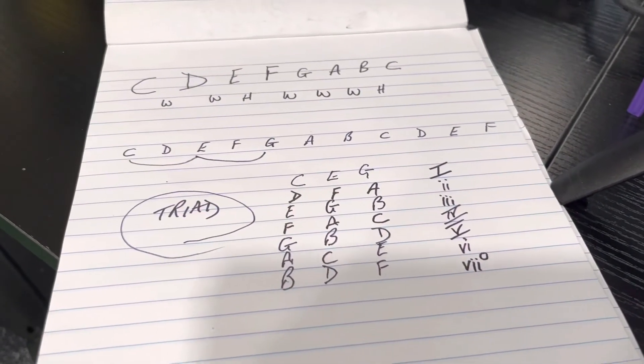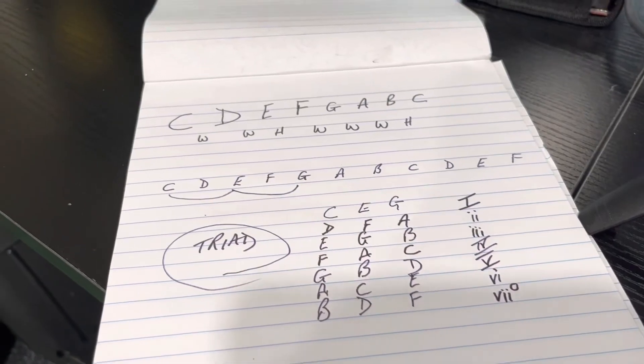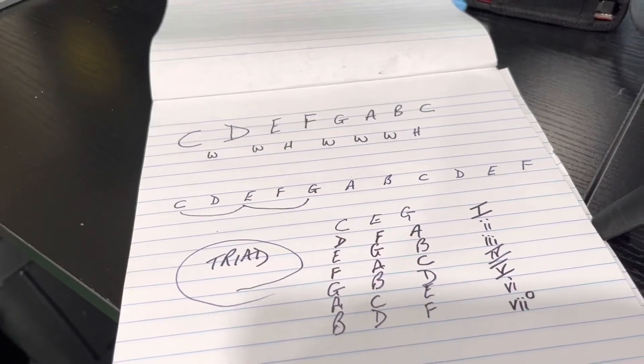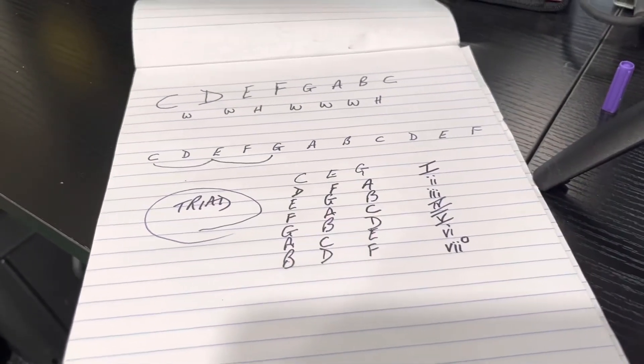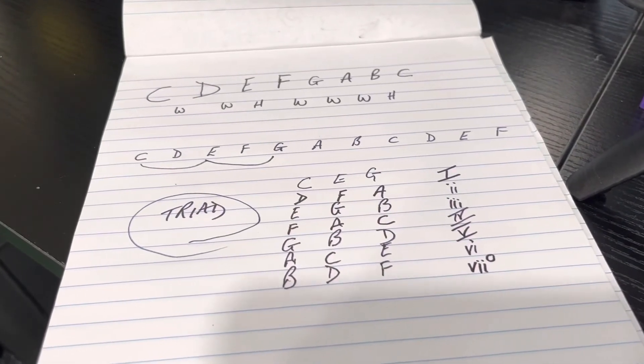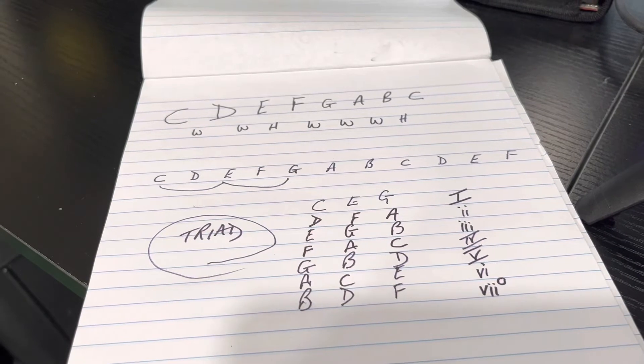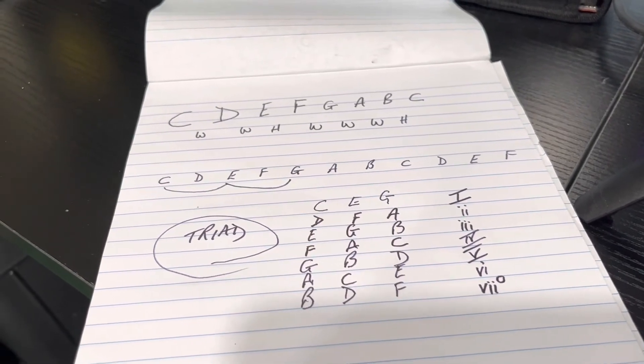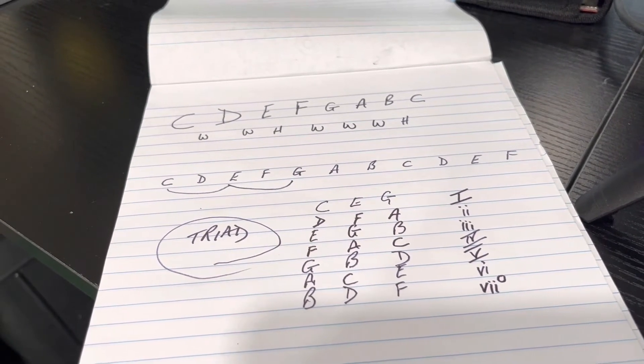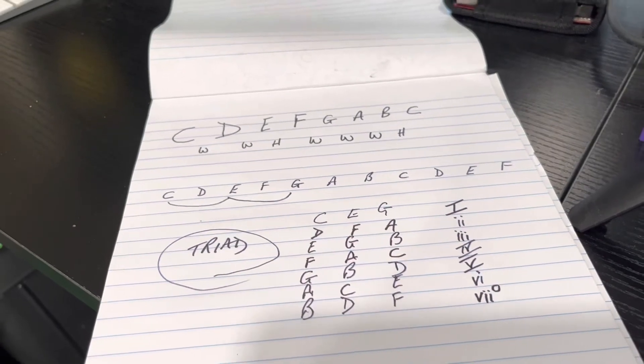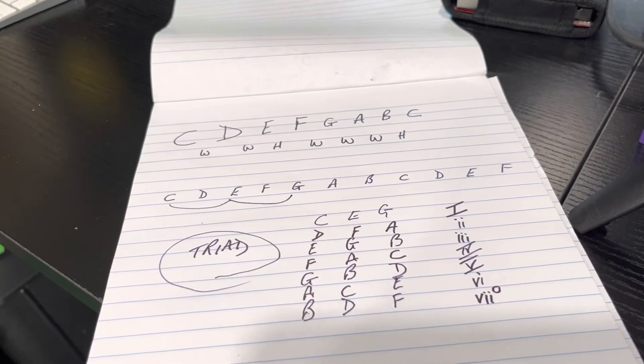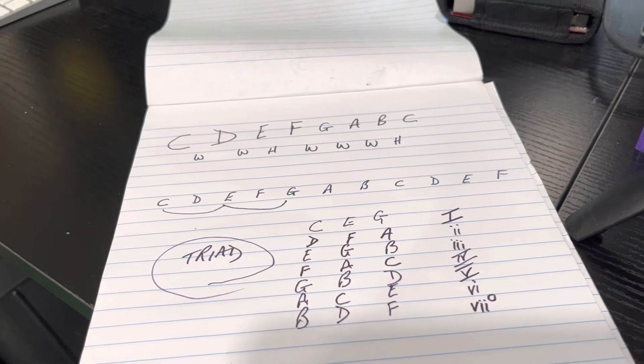Whether it's C major, D major, A major, F sharp major, it doesn't matter. That pattern of chords I, IV and V being major and chords II, III and VI being minor and chord VII being diminished is the same. They're built from the same parts of the major scale.